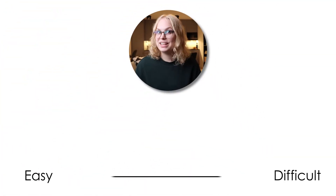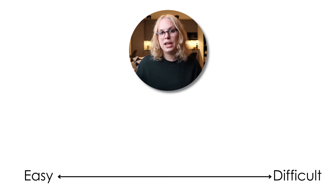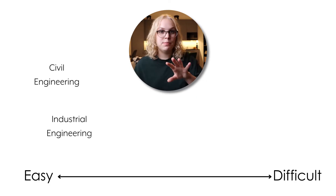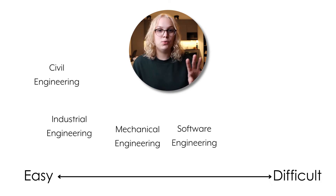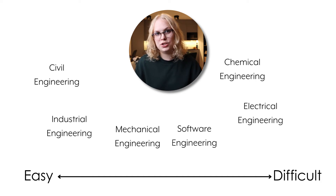If you're worried about not being able to pass your classes, or you're not really interested in solving very difficult challenges, then you probably want to go a little lower on the difficulty scale. On the easier side we probably have civil engineering and industrial engineering. In the middle, software engineering and mechanical engineering. And towards the more difficult side, chemical engineering and electrical engineering.